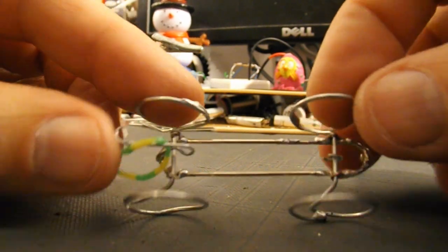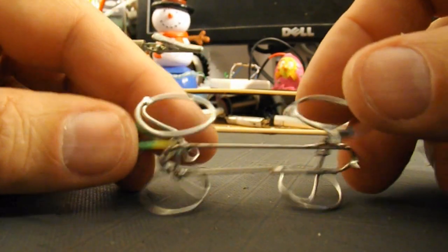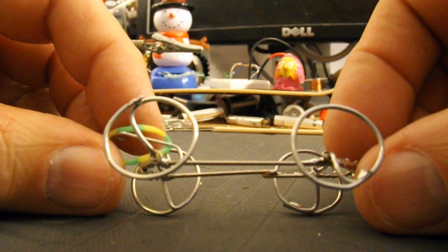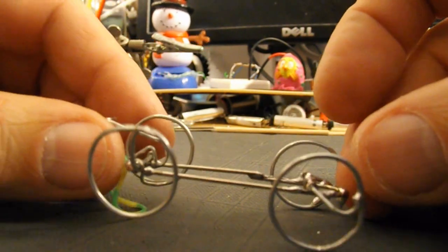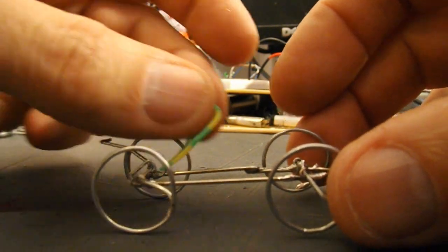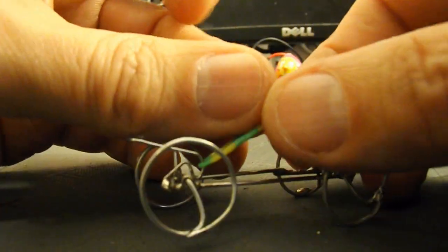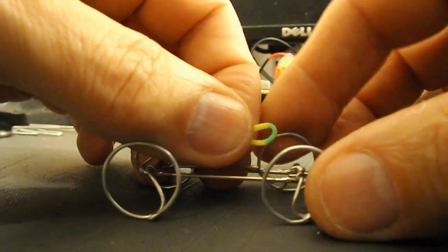But there we are. That's a rubber band powered car the size of a paper clip, made from paper clips. And using a loom band as the rubber band, because that's nice and short.